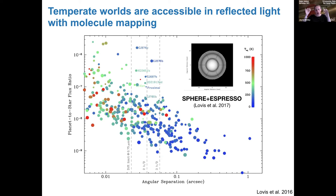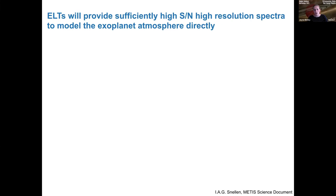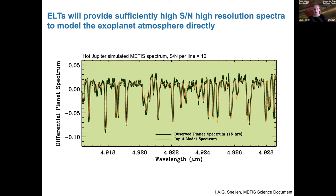The ELT will do incredible things not just for small temperate worlds but for giant planets too. That very messy spectrum of Tau Boötis b taken at the VLT in 15 hours — if I did the exact same thing with the ELT, just making the mirror bigger, the noise goes away and you get a very high signal-to-noise spectrum of a hot Jupiter where each line itself has signal-to-noise of about 10. You can start treating exoplanets like stars in terms of determining their properties observationally.